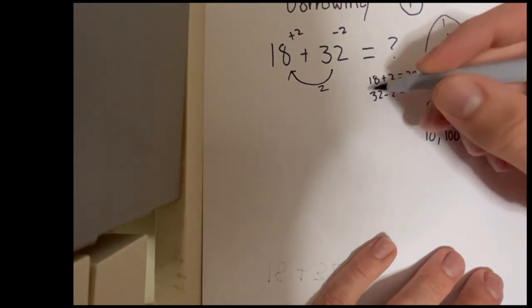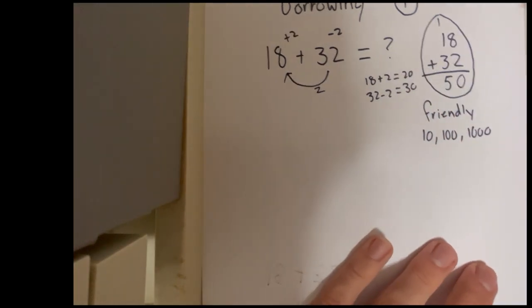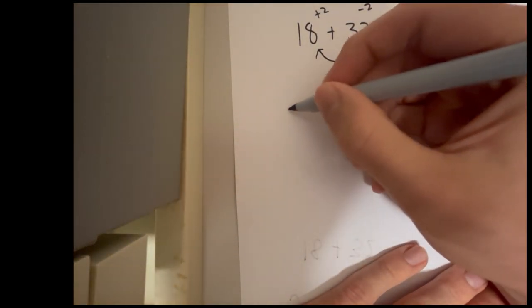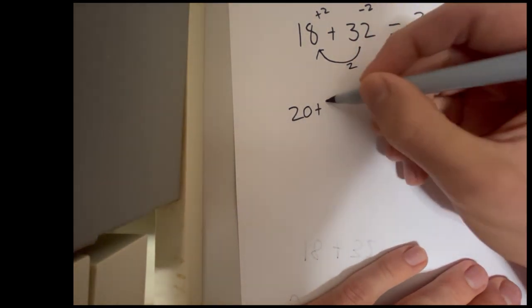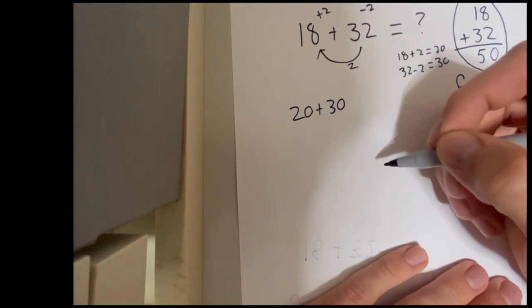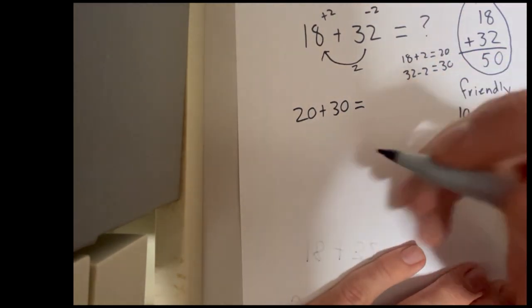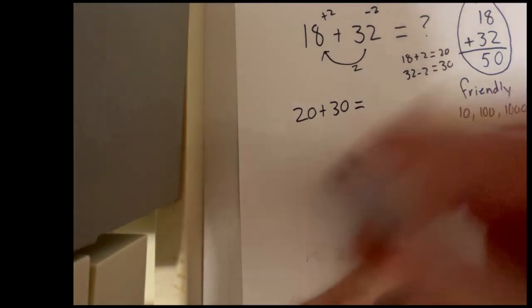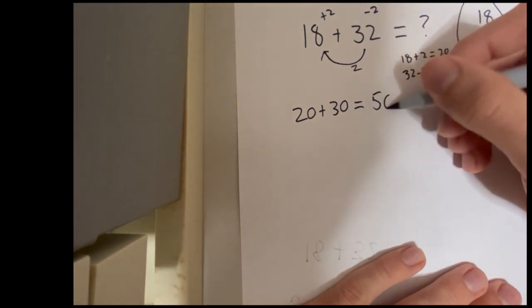Now remember, these are quite easy numbers to plus 2 and minus 2. So you can probably do them in your head. And then we end up with our new question of 20 plus 30. Wow. Now isn't that good? We can say 20 plus 30. Well, I know 2 plus 3 equals 5, and I know that if I do 20 plus 30, that will equal 50.